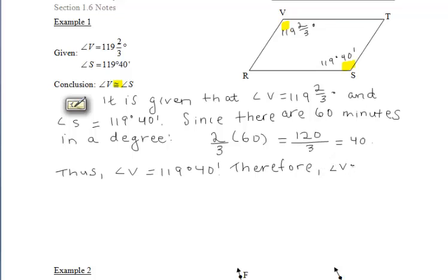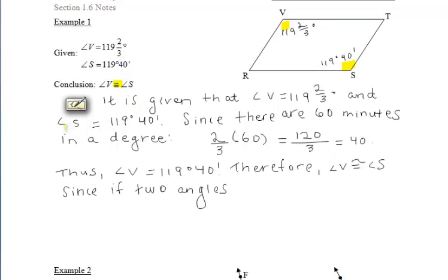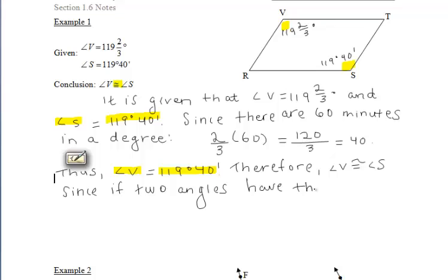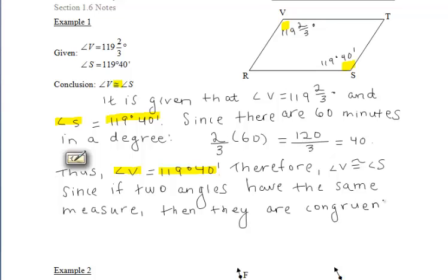Therefore, since we were given that the measure of angle S is 119 degrees and 40 minutes, and the measure of angle V is also 119 degrees and 40 minutes, we can say that angle V is congruent to angle S. If two angles have the same measure, then they are congruent. We use that if-then statement to conclude our paragraph proof, and it flows really nicely into that conclusion.